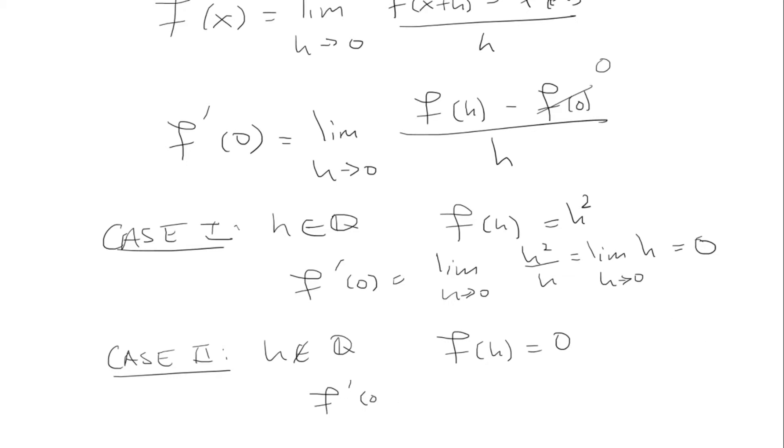So f prime of 0 will be the limit as h approaches 0. Now, we know that f of 0 is 0 when we plug in 0. So f of h we set as 0 because it's always 0. And thus, the limit is 0.